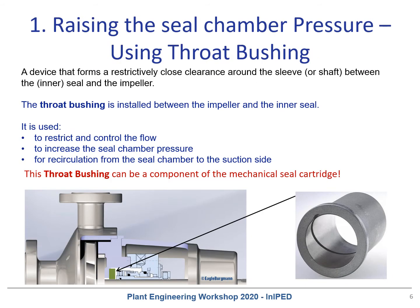Some details on option one: raising the seal chamber pressure by using a throat bushing, which is a device that forms a restrictively close clearance around the sleeve or shaft between the inner seal and the impeller. The throat bushing is installed between the impeller and the inner seal, used to restrict and control flow, increase the seal chamber pressure, or allow recirculation from the seal chamber to the suction side of the pump. This throat bushing can also be a component of the mechanical seal cartridge.